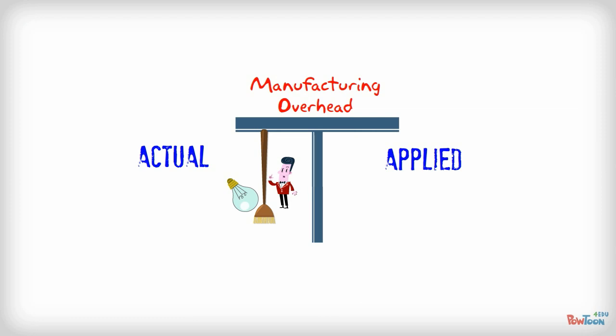When we apply manufacturing overhead cost to particular jobs, we make an estimate. That estimate will probably never be 100% correct. If the manufacturing overhead cost applied is higher than the actual manufacturing overhead cost, then it is over-applied. If the actual is higher than the applied, then it is under-applied. The difference can be either closed to cost of goods sold or assigned to different inventory accounts.